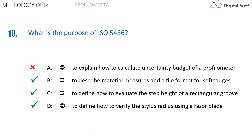The correct answers are B, C, and D. ISO 5436 is a standard that describes, in its first part, material measures used for the calibration of stylus profilometers. It includes material measures with steps or various types of grooves, and also describes how to evaluate the shape of the stylus tip using a razor blade. The second part of this standard defines soft gauges, which are files or reference programs used to validate software algorithms. The standard does not deal with uncertainties.